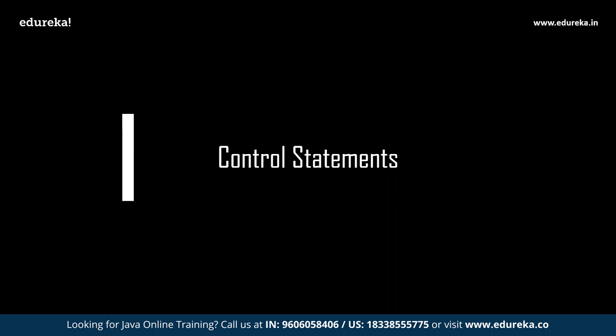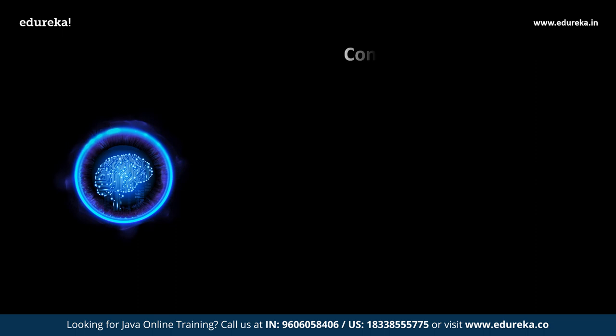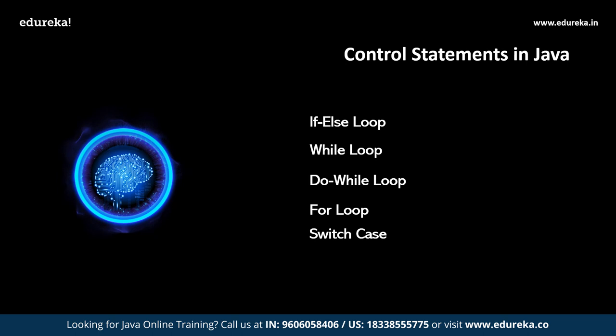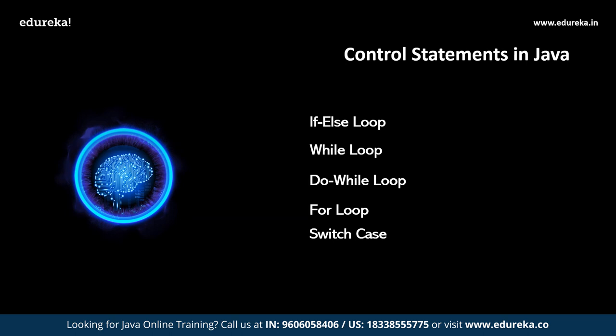A control statement in Java determines whether other statements will be executed or not — in simple terms, it controls the flow of a program. The control statements supported in Java are: if-else, while loop, do-while loop, for loop, and switch case. These are the basic control statements that every programmer must know.